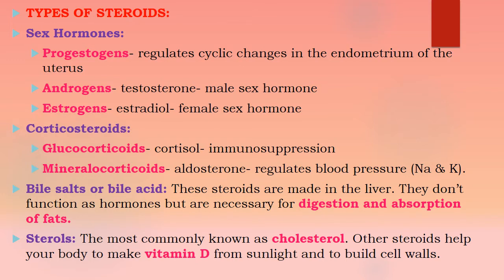We already know that androgens and estrogens are nothing but male as well as female sex hormones. Corticoids are nothing but immunosuppressants, and they also regulate blood pressure by applying the Na as well as K ions inside and outside the cell. Bile salts secreted in the liver control digestion and absorption of fats present in food. One example of a sterol is cholesterol, and some steroids can absorb vitamin D from sunlight.